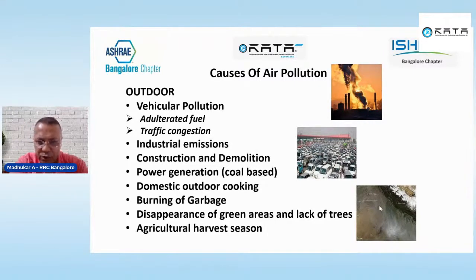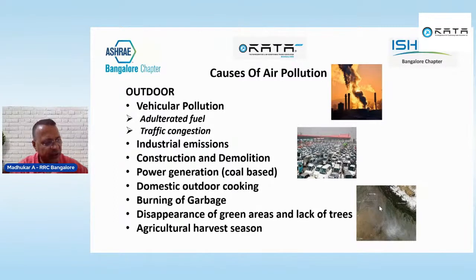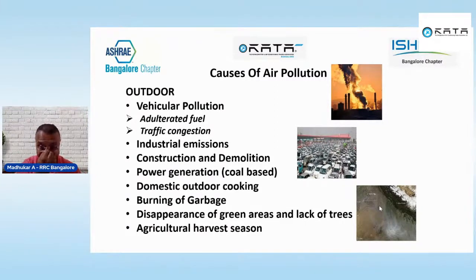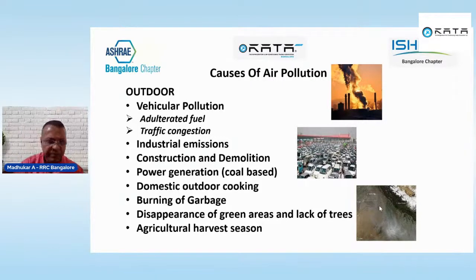The disappearance of green areas and lack of trees — caused by metro development — is another outdoor pollutant source. If we cut one tree, we should plant ten elsewhere to compensate. During agricultural harvest, pollens emit fumes that many people cannot tolerate, resulting in asthma or severe cough and cold. These are the main categories of outdoor pollutants that affect air quality.